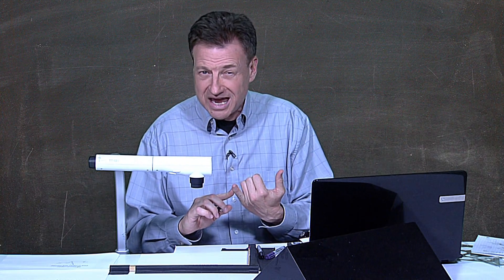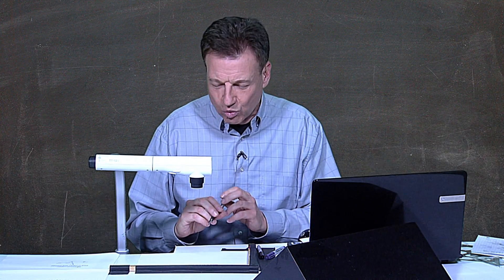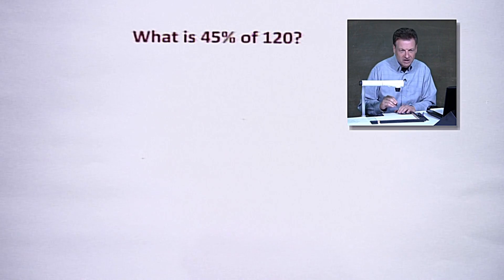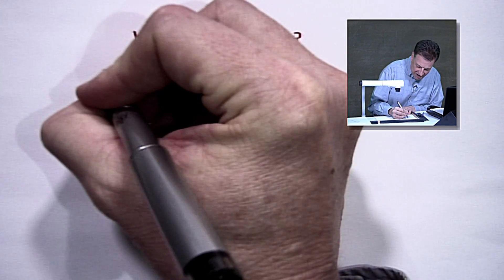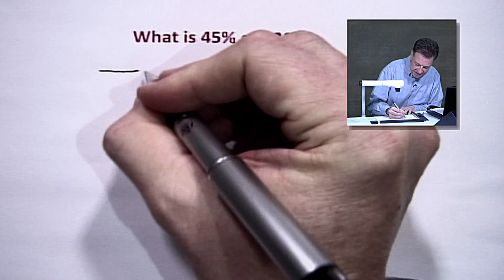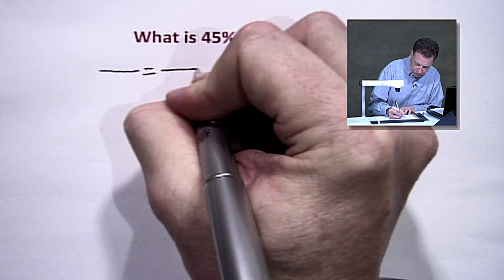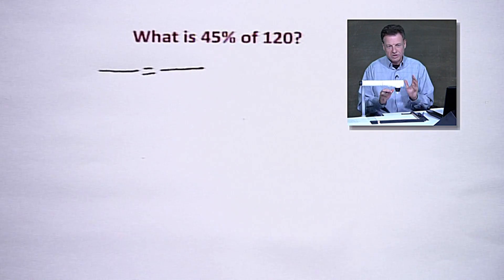So we're going to work with it a couple of ways here. We're going to pick it up as a proportion, and also we're going to work with it as just a simple decimal problem. So let's take a look first at the proportion. What is 45% of 120? So when we're setting this up, we're going to have...